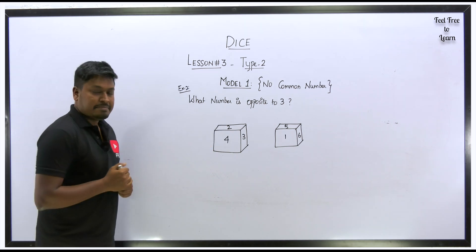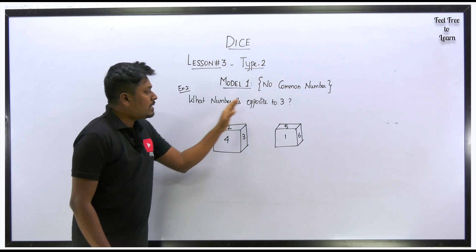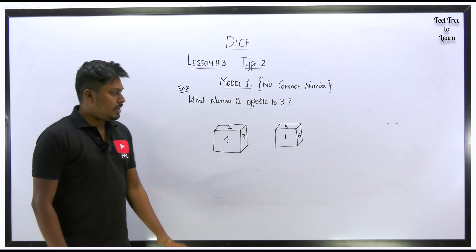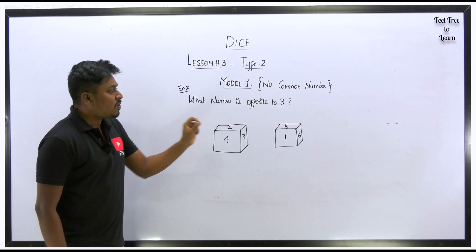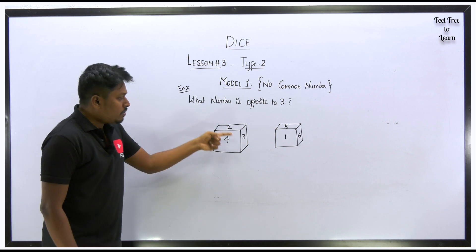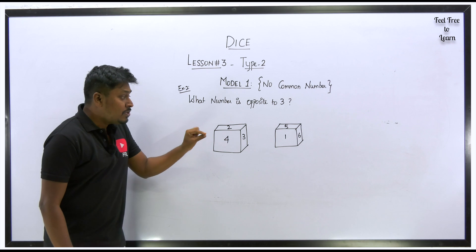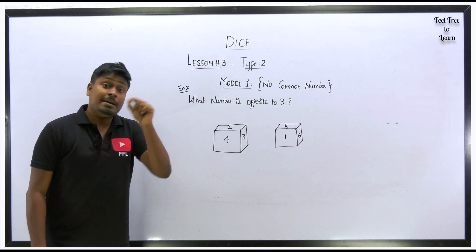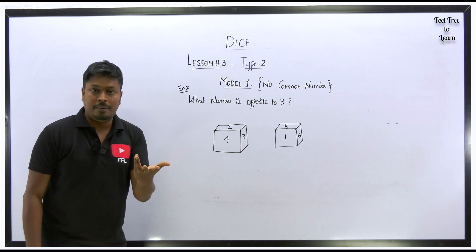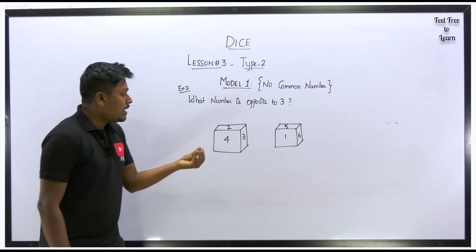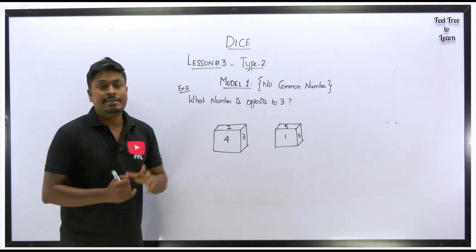Example 2 from Model 1: find what number is opposite to 3. First check for common numbers in both diagrams — the faces shown are 4, 2, 3, 1, 5, 6 — there is no common number. When there is no common number, check whether the dice is standard or general.